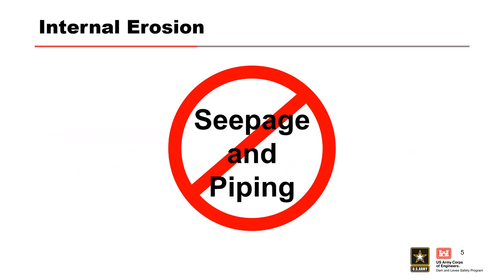Internal erosion has commonly been described as seepage and piping in the literature and by practitioners, but this poorly characterizes internal erosion. All dams and levees have some seepage as the impounded water seeks paths of least resistance through the embankment and foundation, and should be controlled to prevent erosion of the embankment or foundation or damage to concrete structures. Seepage becomes a concern if it is carrying material with it. Piping is the combination of a process of internal erosion in which a number of phases must occur and be sustained in order that a pipe develops through the embankment or foundation and allows the passage of considerable quantities of water, which may lead to a breach.